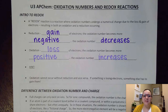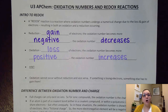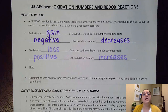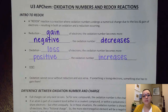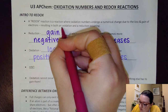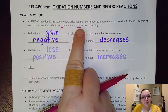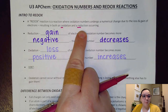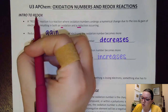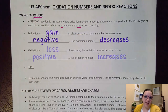Hey guys, Ms. Maricic here, and in this video we're going to talk about redox reactions and assigning oxidation numbers. A redox reaction is where oxidation numbers undergo some sort of numerical change, either because electrons are lost or gained. We have both oxidation and reduction taking place, and if you notice the first letters of those names, combining them gives us the overall name: a redox reaction.